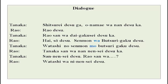This is a simple conversation. You have already done shitsure desu ga — it means I am sorry but I am going to ask you something very directly, and then you put up a question. Onamae wa nandesuka — onamae means name, wa is the subject particle, nan is the question word meaning what, desu is the verb part, and ka makes it a question.